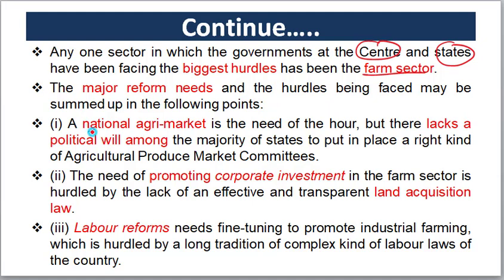First, we need to look at the National Agriculture Market. We need to establish a national agriculture market across the country. The national agriculture market would cover the majority of states. Currently, the price system is fragmented — a product may be priced very differently in different locations, and that disparity needs to be addressed.